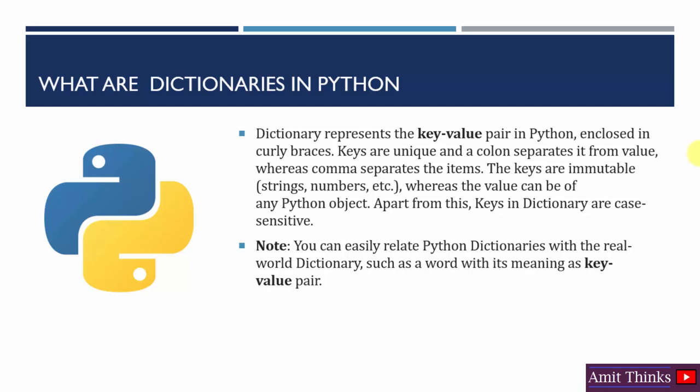The keys are immutable and can be in the form of strings or numbers, whereas the value can be any Python object. The keys in a dictionary are case sensitive — you need to remember that.